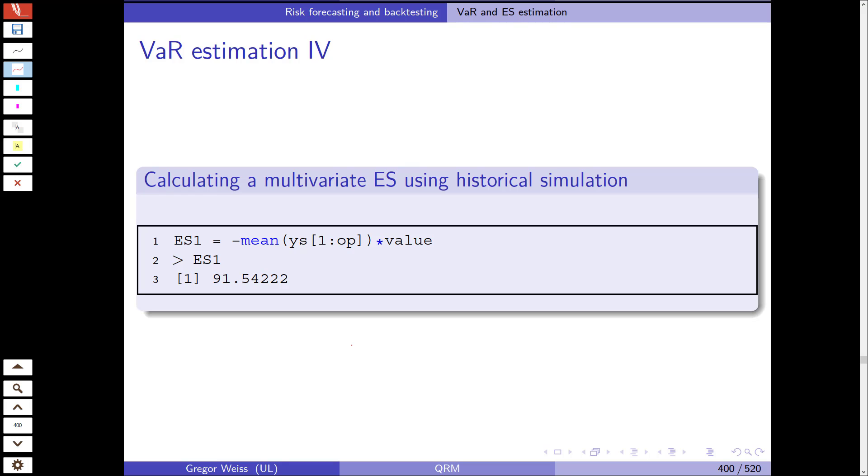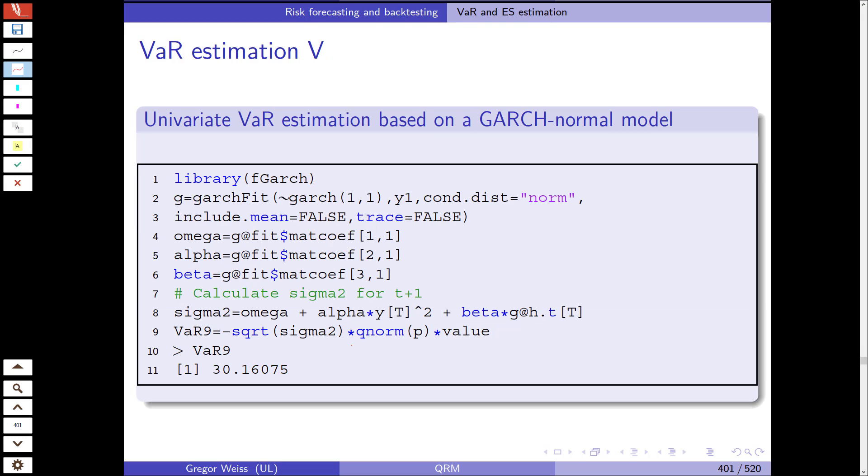Now the expected shortfall is what? It's the mean of those sorted returns from the 1st position until the VAR. And because we want to give it out as a positive number, we switch the sign on this mean and then we get the expected shortfall of 91.54 euros or dollars. We can do the same for the portfolio.